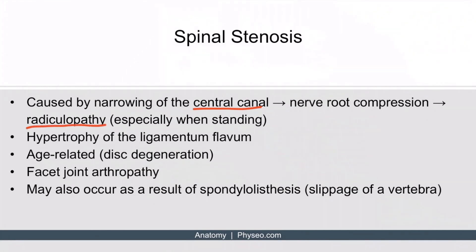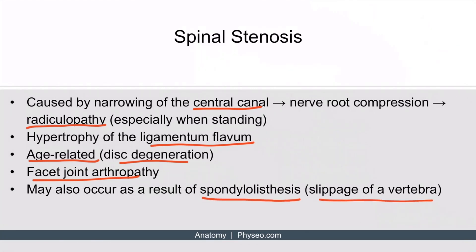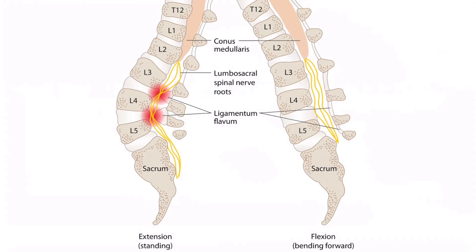Spinal stenosis is caused by narrowing of the central canal, resulting in nerve root compression and radiculopathy. There are many causes, including hypertrophy of the ligamentum flavum, age-related disc degeneration, facet joint arthropathy, and spondylolisthesis, or slippage of a vertebra. Ultimately, any of these causes may result in compression of the central canal.